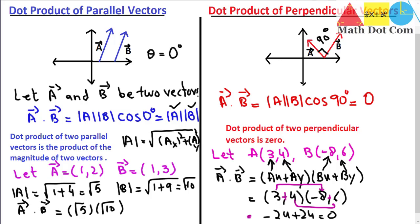To summarize: for parallel vectors, the dot product equals the product of their magnitudes, while the dot product of perpendicular vectors will always be zero. These are the two key facts to keep in mind.